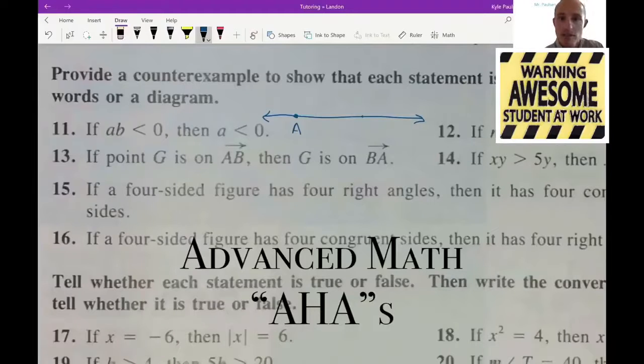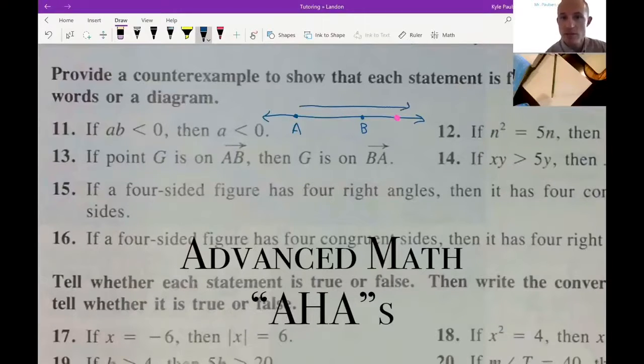A is here. And let's say B is here. So do we have A, B? Yeah, G could be here. Yes, exactly. Exactly. That's what they wanted you to show. Oh, got it.